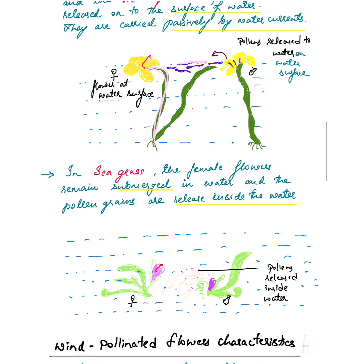In case of seagrass, the female flowers remain submerged — that is, they are present inside the water — and the pollen grains are also released inside the water itself. Since the female flower is submerged, the pollen grains have to be released inside the water. Seagrass is the example where pollen grains are released inside the water.